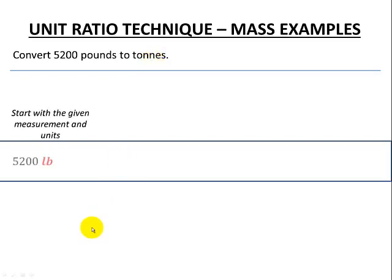So starting with our given measurement in units again, there's our 5,200 pounds. And again, the LB is the imperial symbol for pounds.